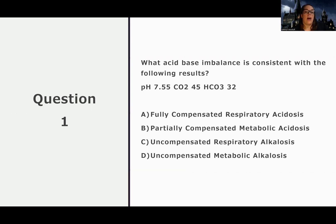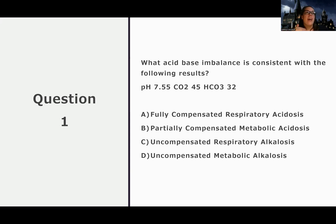Then I need to see if my CO2 or my HCO3 is going in the same direction or the opposite direction. It looks like my pH is going in the same direction as my HCO3, which means I have a metabolic problem. So already with that information I can tell you the answer has to be D because it's the only one that's metabolic and alkalosis. It's also uncompensated because my CO2 is within the normal range — 35 to 45. Because of that, I am not starting to compensate yet. In order for this to be partially compensated, the CO2 would have to be abnormal, above 45. So effectively this question is really just asking you what is this ABG telling you.